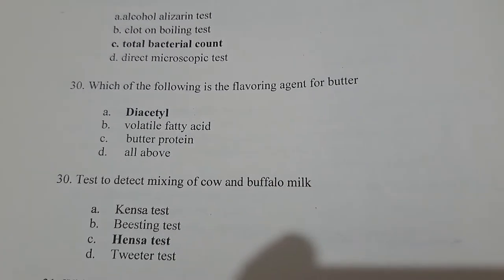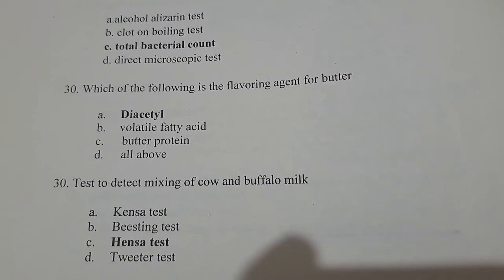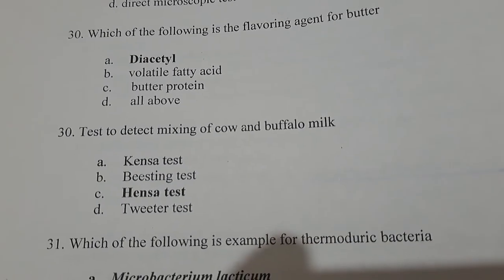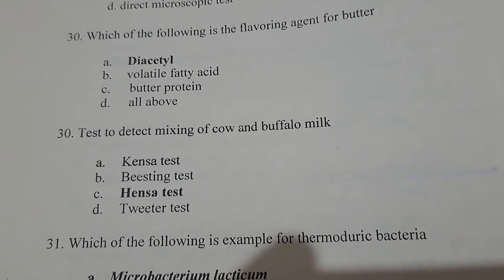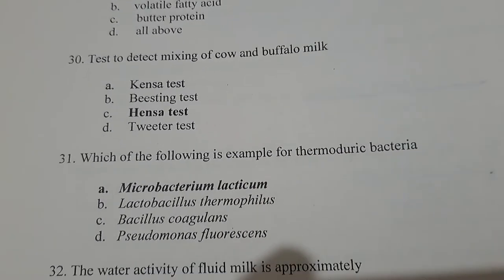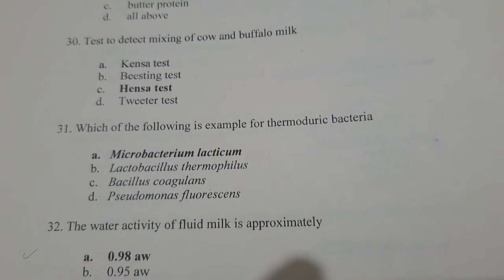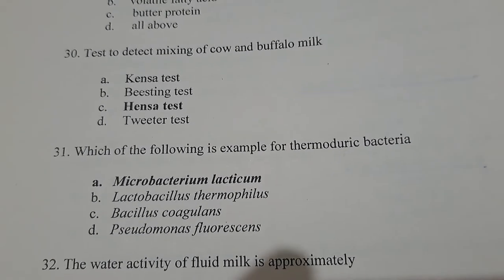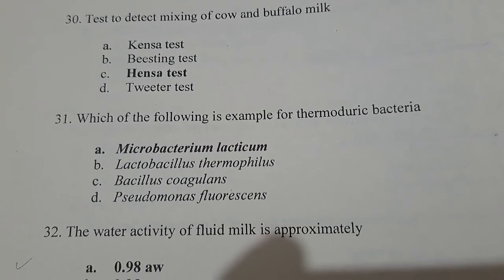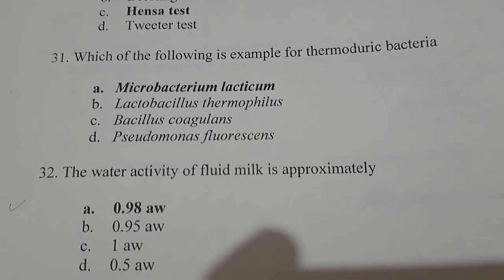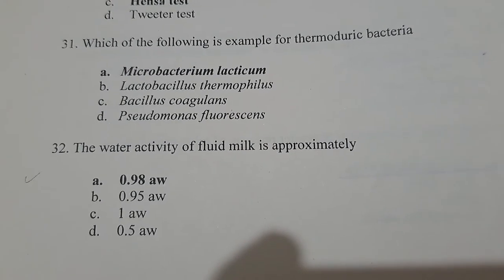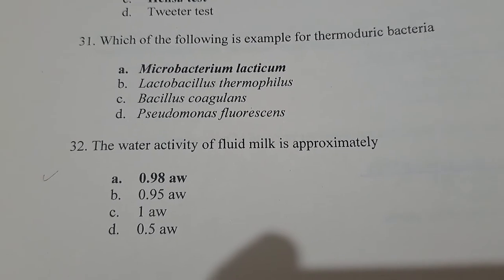Question 19: The flavoring agent for butter is diacetyl. The test to detect mixing of cow and buffalo milk is the Hansa test. An example of thermoduric bacteria is Microbacterium lacticum. The water activity (Aw) of fluid milk is approximately 0.98.